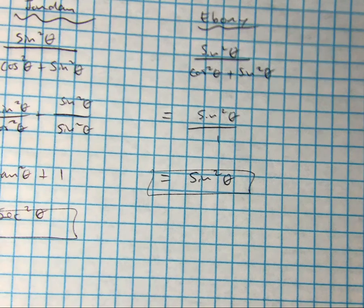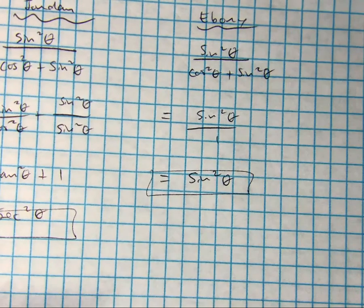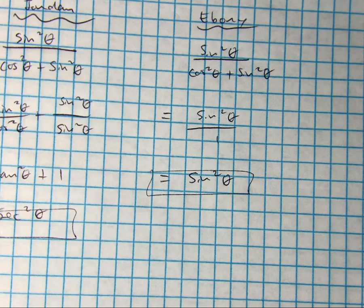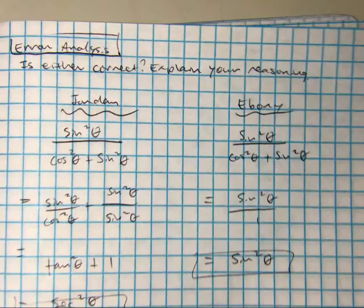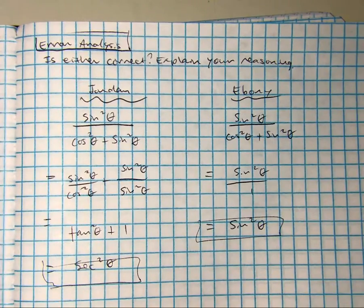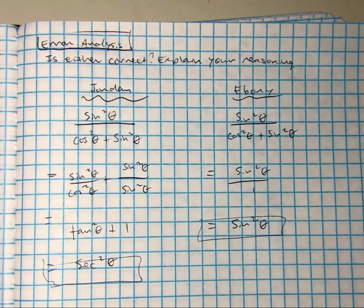Alright, you were given this error analysis problem. Jordan and Ebony. Is either of them correct? Explain your reasoning.